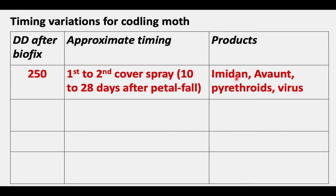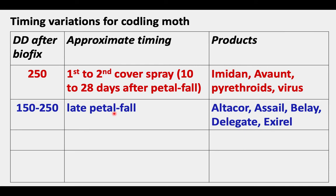The products that use the 250 degree day rule are Imidan, Avant, any of the pyrethroid insecticides, and any of the virus insecticides. A degree day target of 150 to 250, which is approximately late petal fall, is the timing for Altacor, Assail, Belay, Delegate, and Exirel.